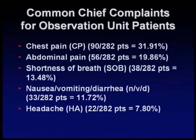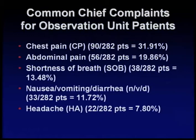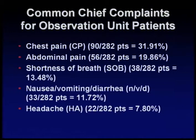The most common chief complaints we saw during the project were chest pain, which was 90 out of 282 patients or 32 percent. Abdominal pain was 56 out of 282 patients, which is about 20 percent. Shortness of breath was 38 out of 282 patients or 13.48 percent. Nausea, vomiting, or diarrhea was 33 out of 282, which is about 12 percent. Headaches took about 8 percent of the patients with 22 out of 282.